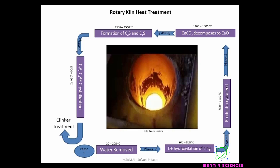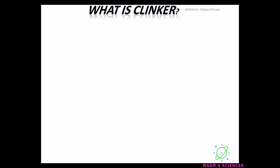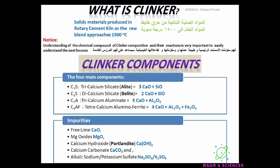The kiln is the equipment used in the Portland cement manufacturing process, but the clinker is the solid material that is produced in the rotary cement kiln. Understanding the chemical compounds of clinker composition and their reactions is very important to easily understand the next lessons.